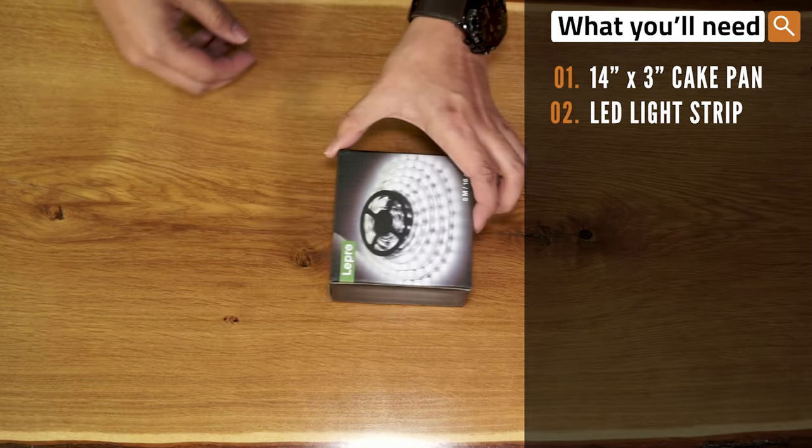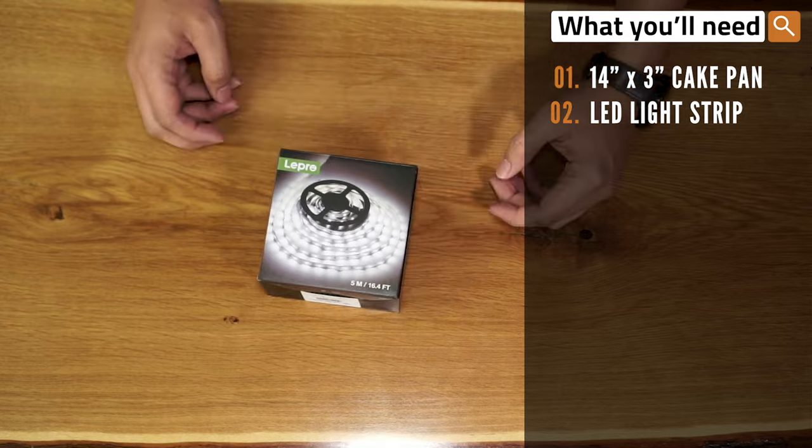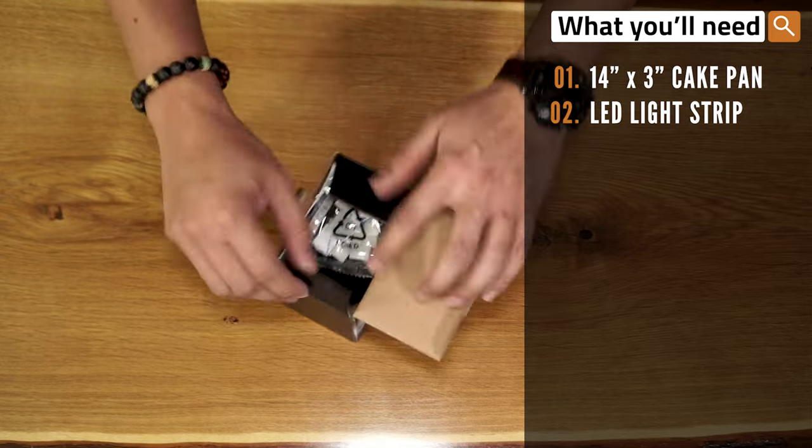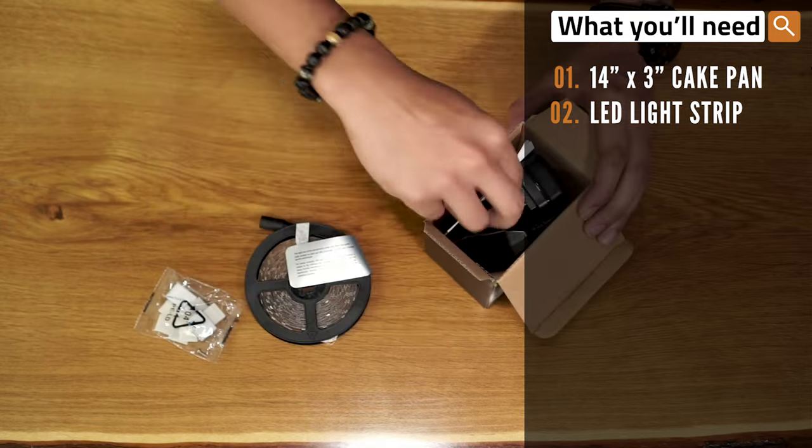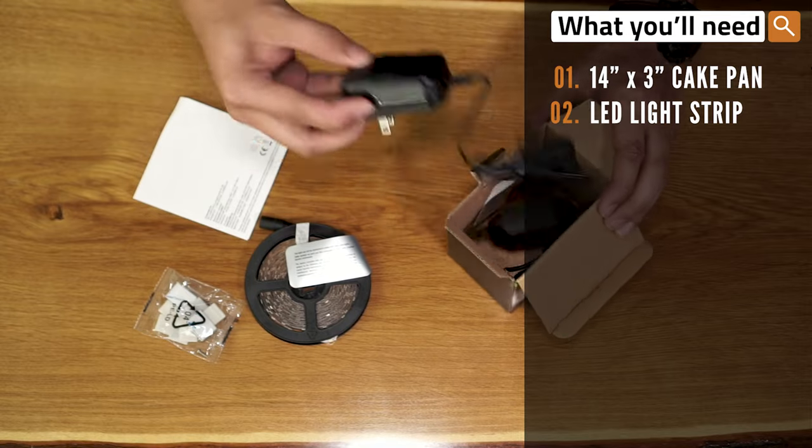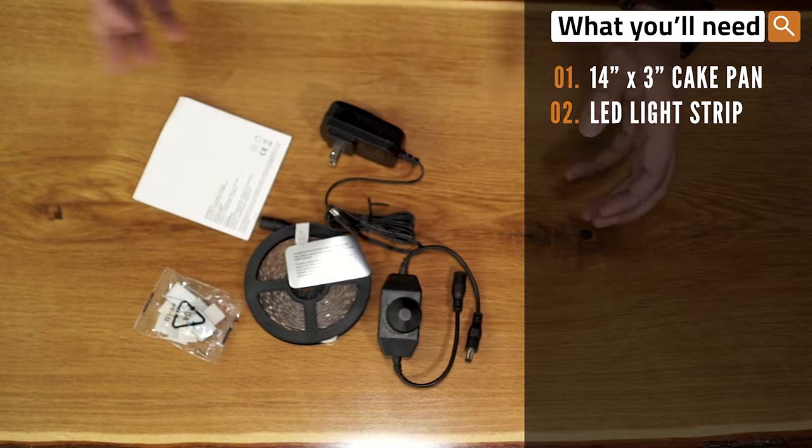For the lights, I bought the Leepro 6000K Daylight white LED light strip. This one comes with a power adapter and a dimmable switch for easy brightness adjustment.